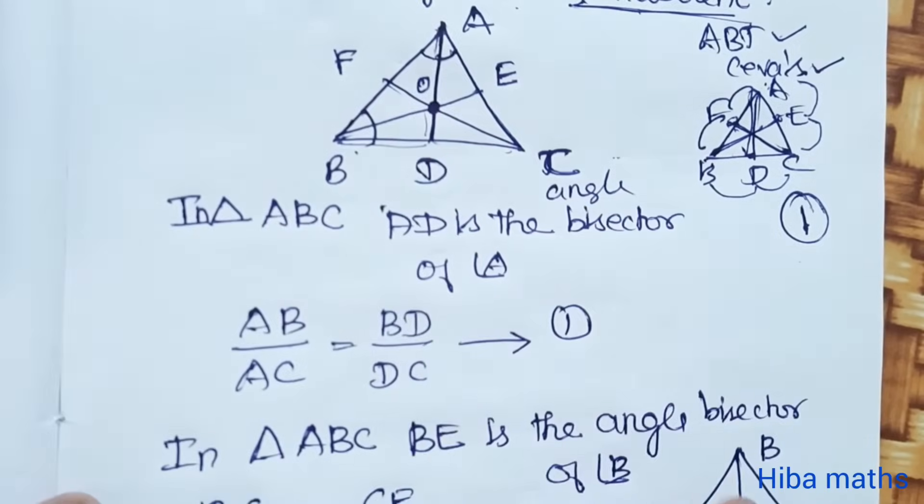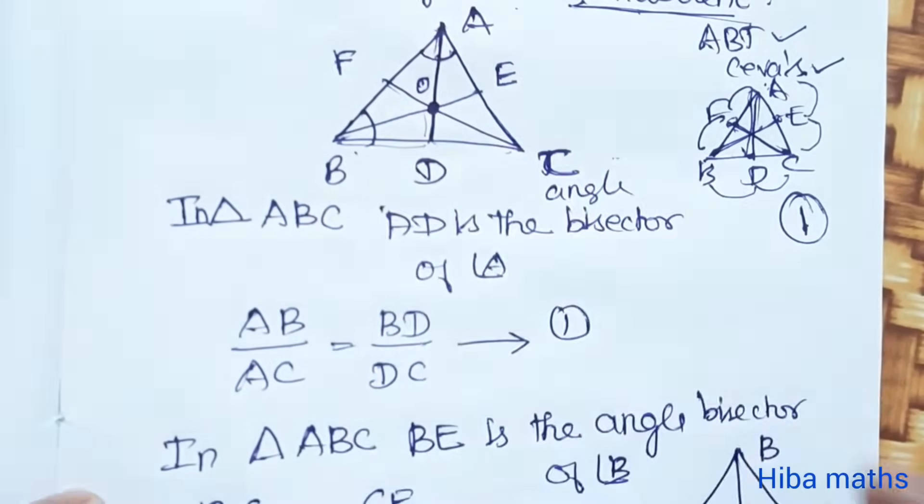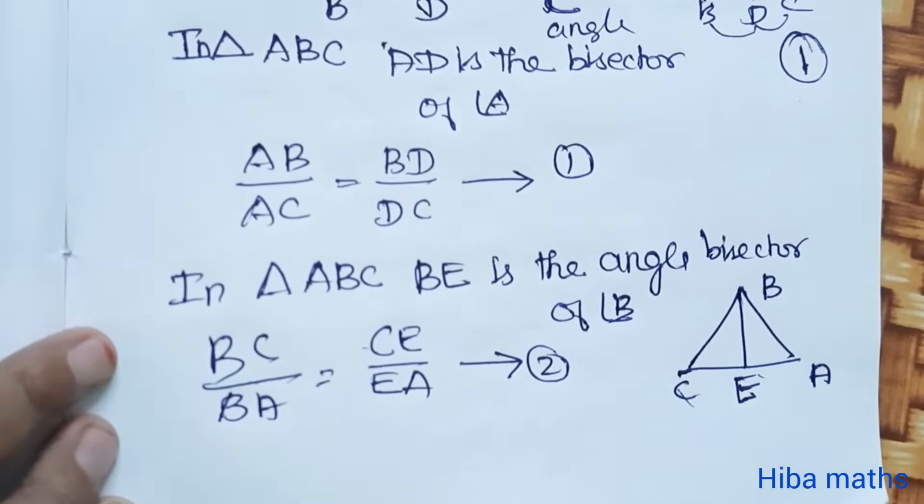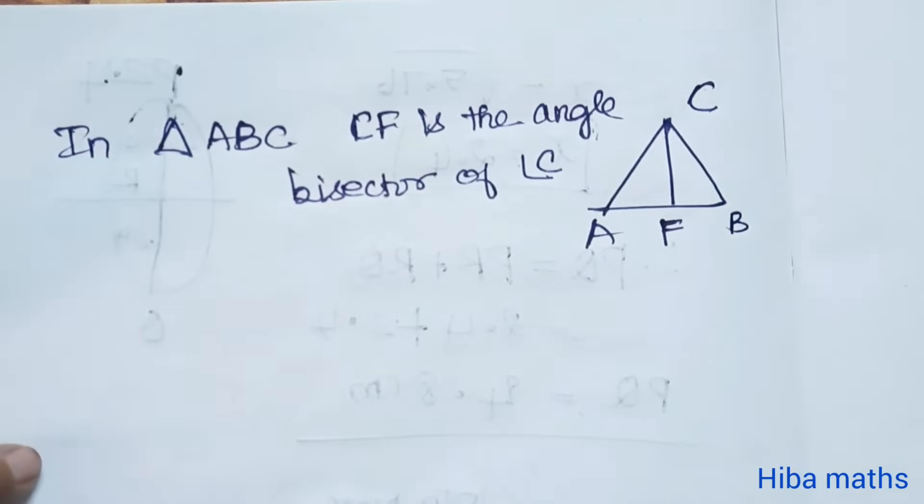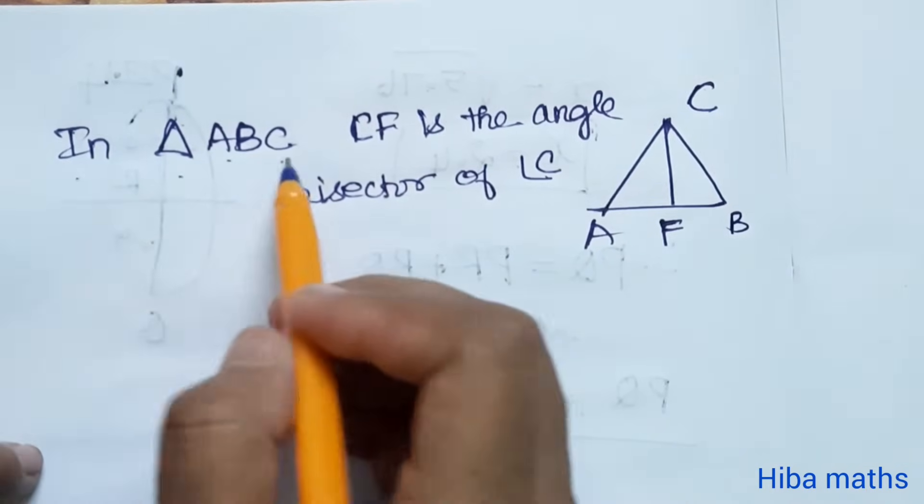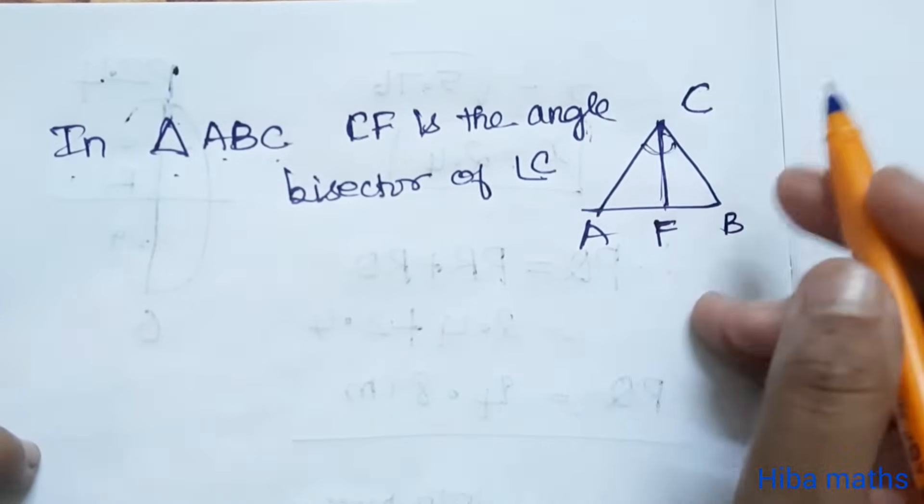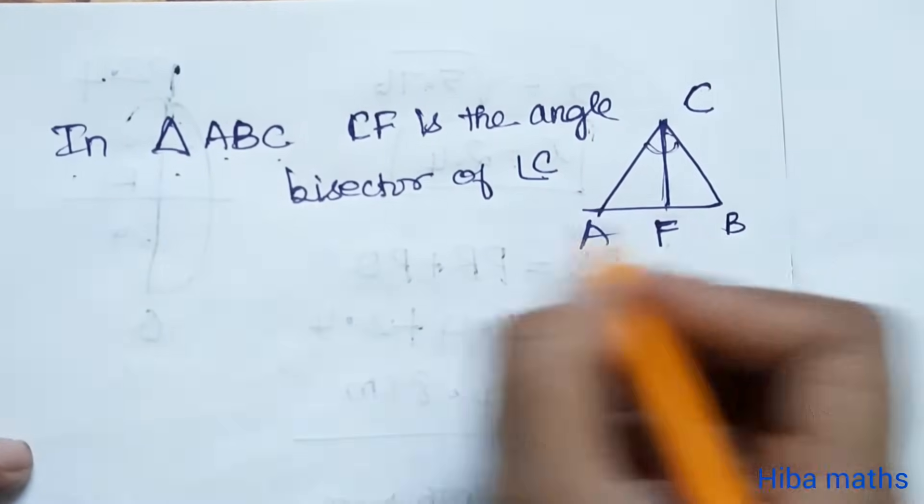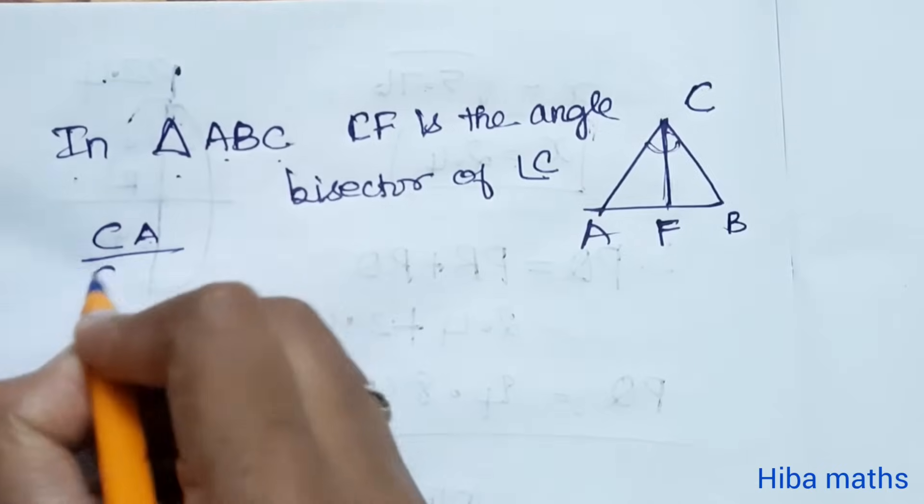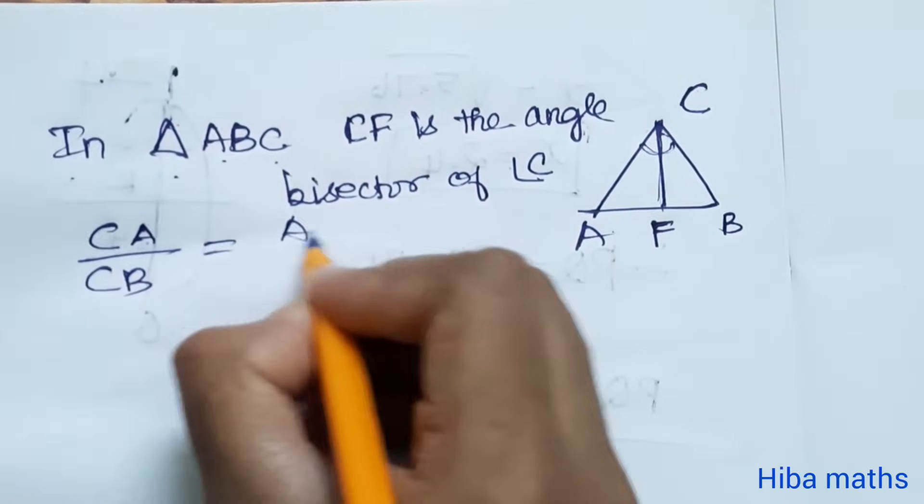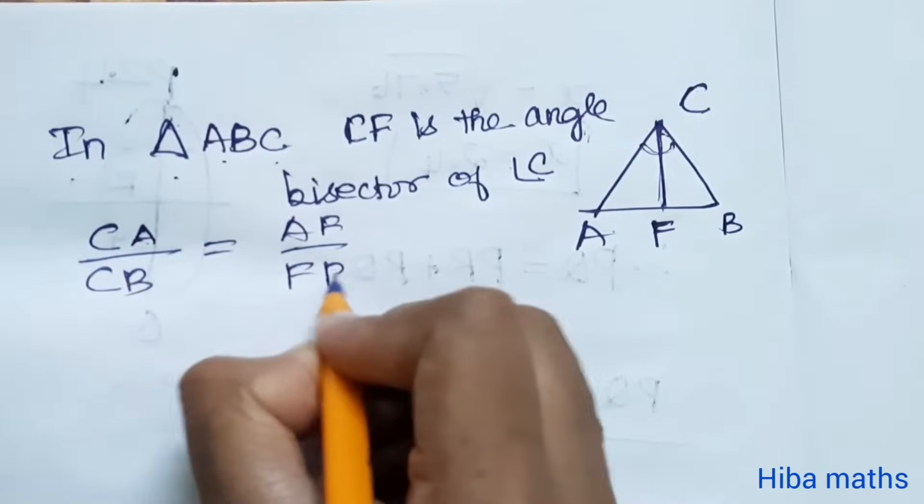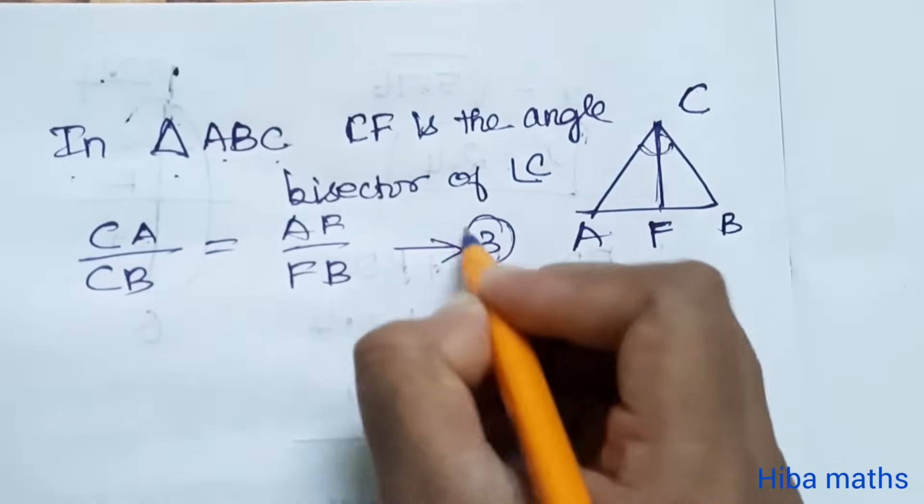In this diagram, third equation: In triangle ABC, CF is the angle bisector of angle C. CA/CB = AF/FB. This is the third equation.